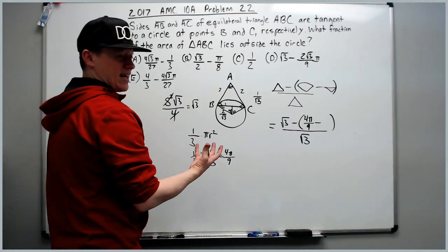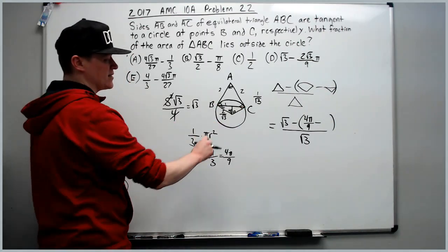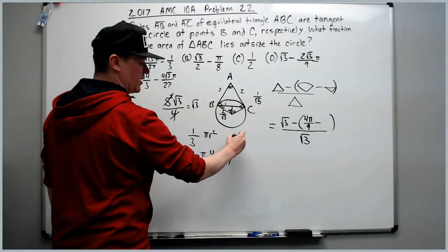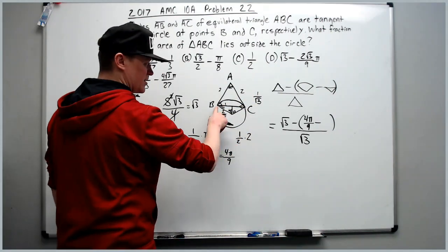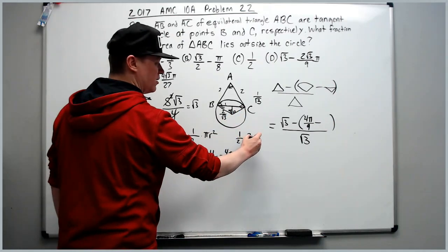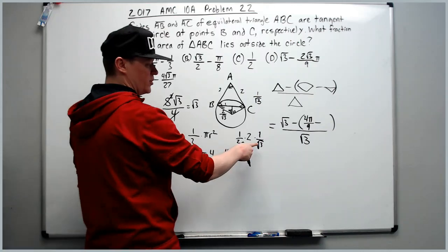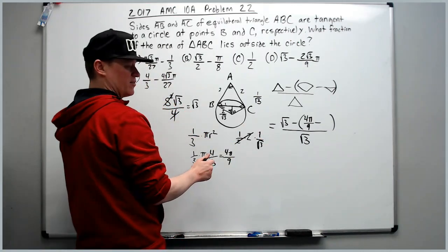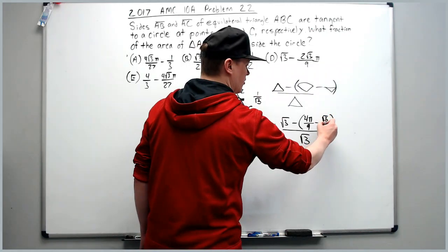We'll just do what we've already calculated. We need half base times height. BC can be the base, and the height we wrote down as 1 over root 3. So 1 half times 2, which is the length of BC, times the height of 1 over root 3. 1 over root 3 is what we have left after the 2 and the half cancel. We will write it as root 3 over 3.